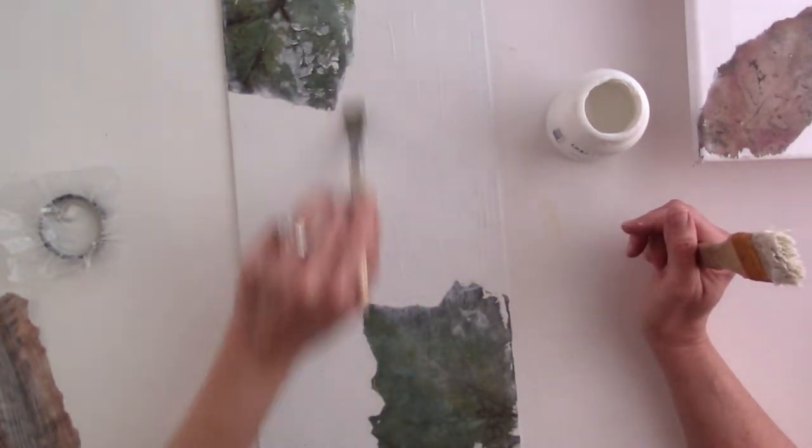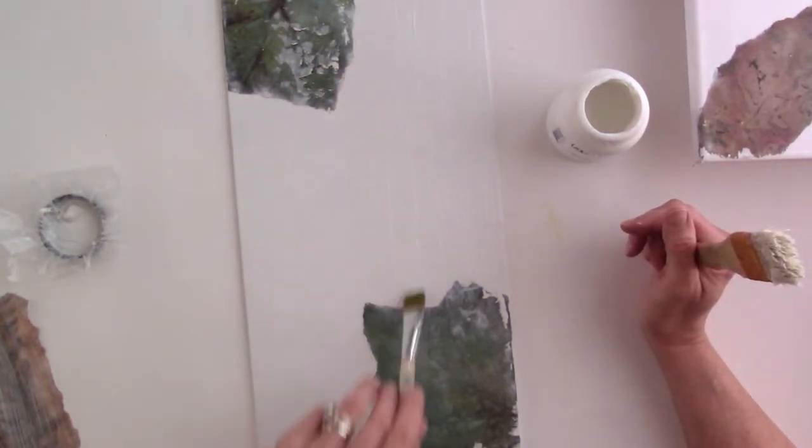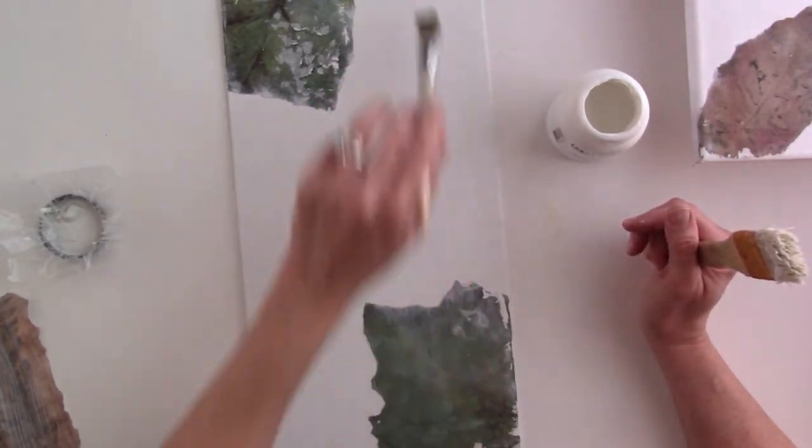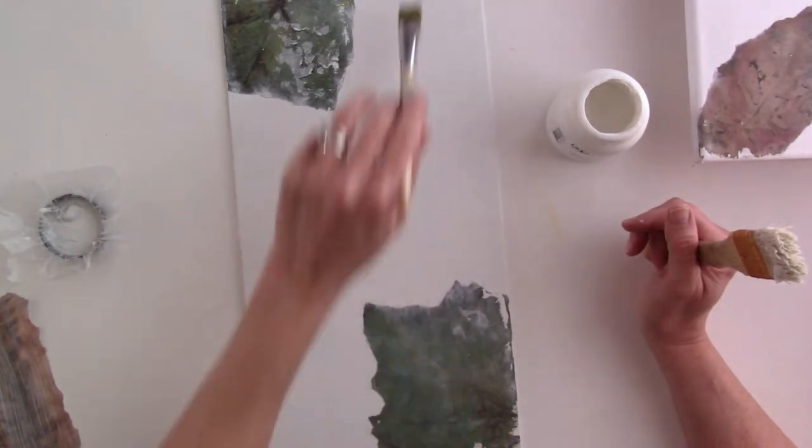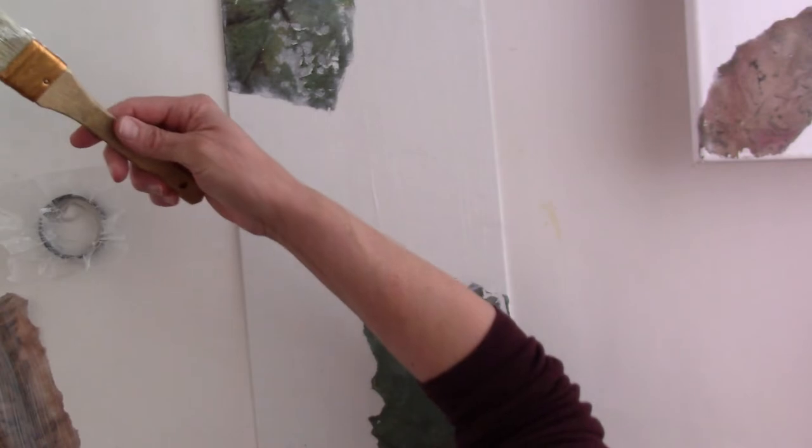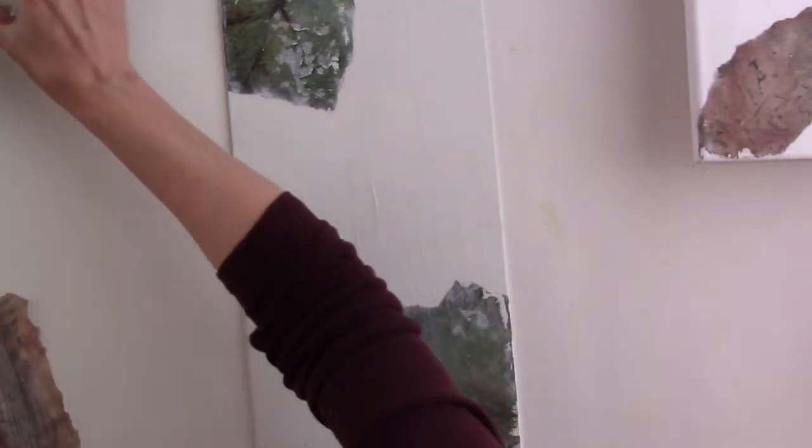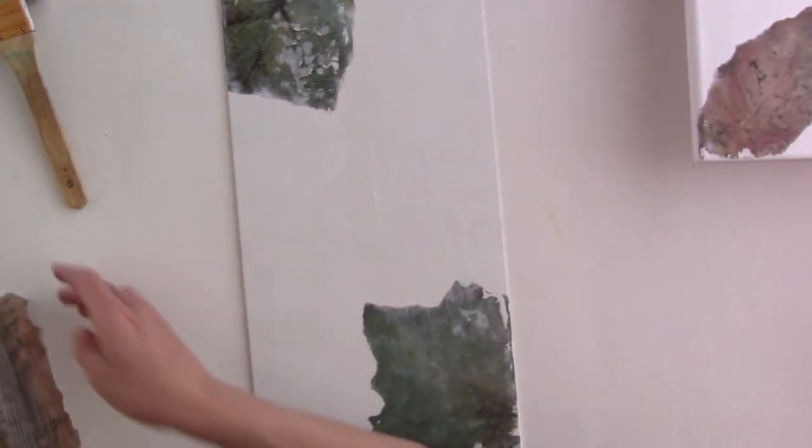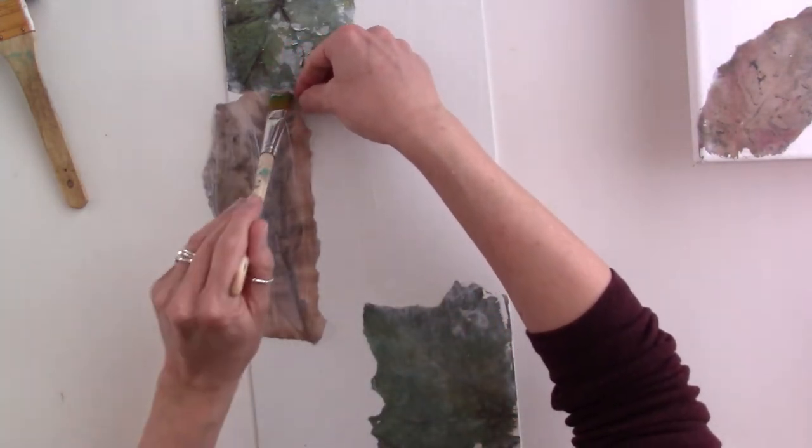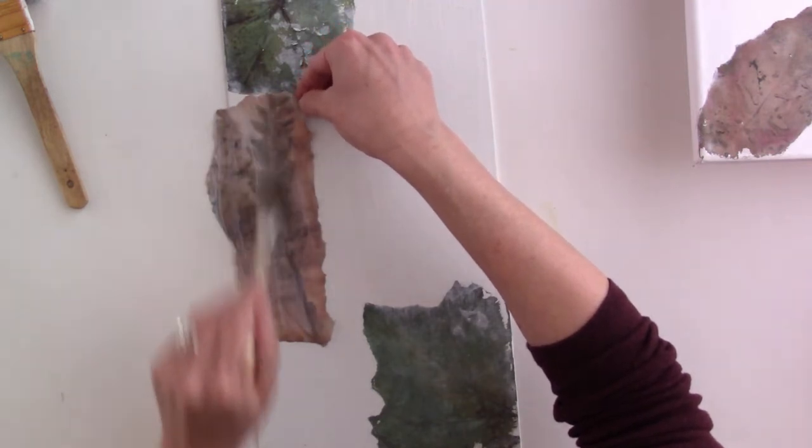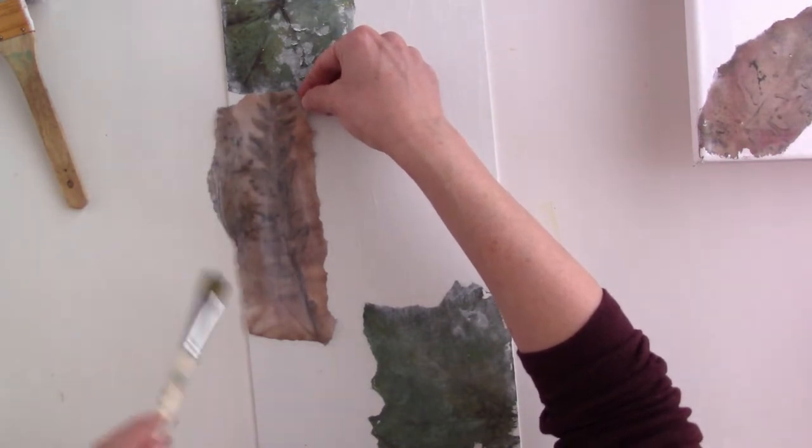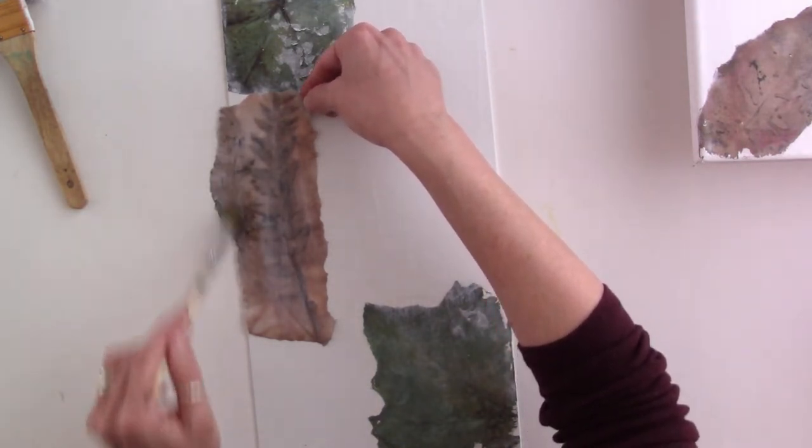I'm going to smooth this out to get rid of those brush stroke lines. I'm newer at image transfer—I've done it a long time ago and it's just been a really long time. I'm getting back into it because I really love the look and I love the thinness of an image transfer layer.